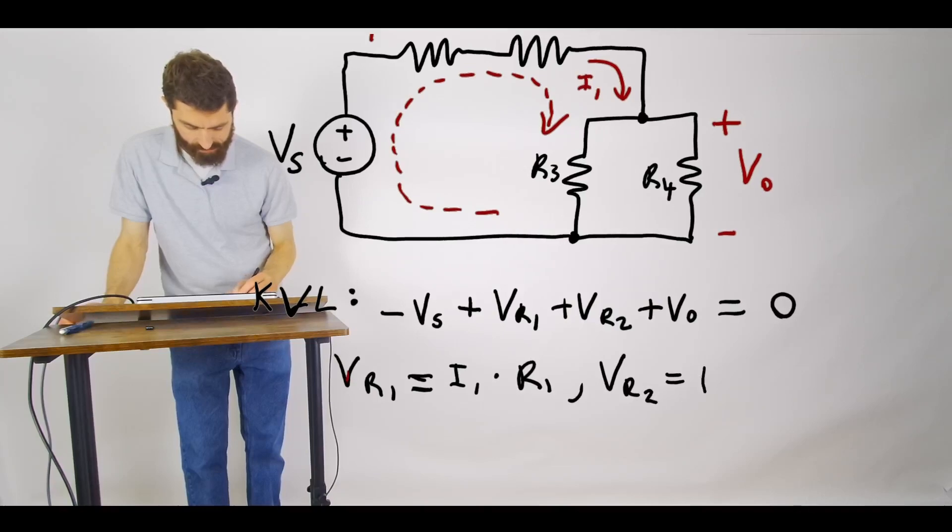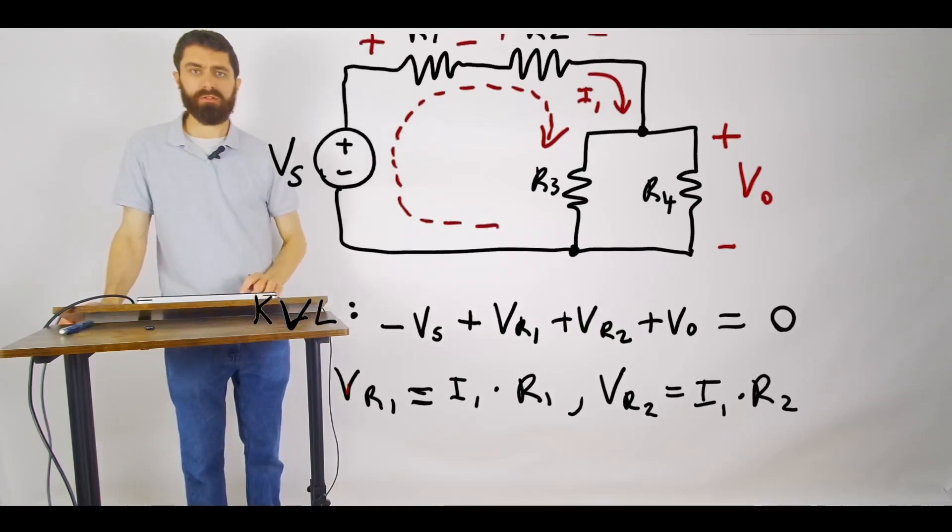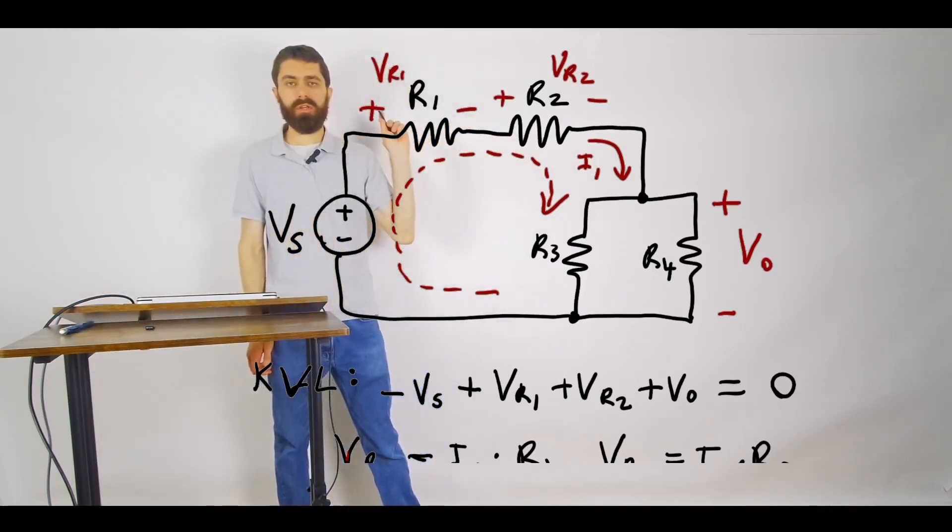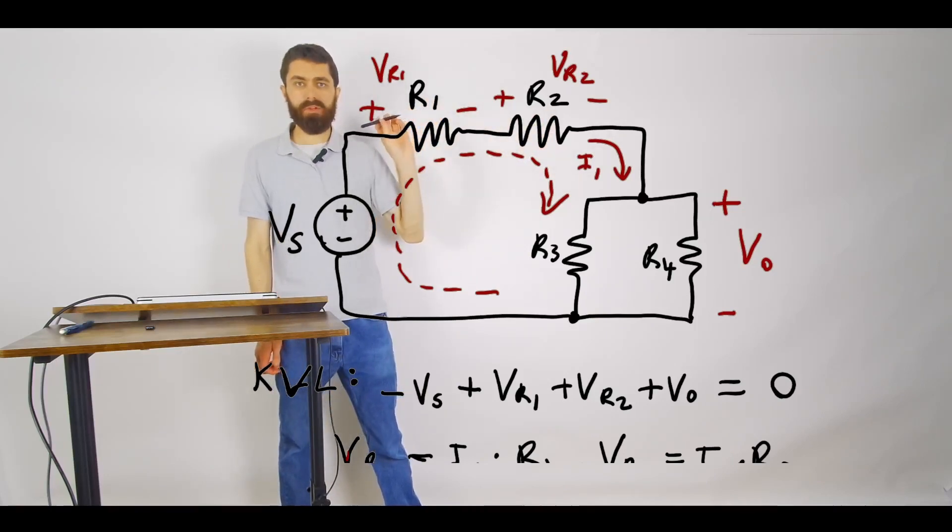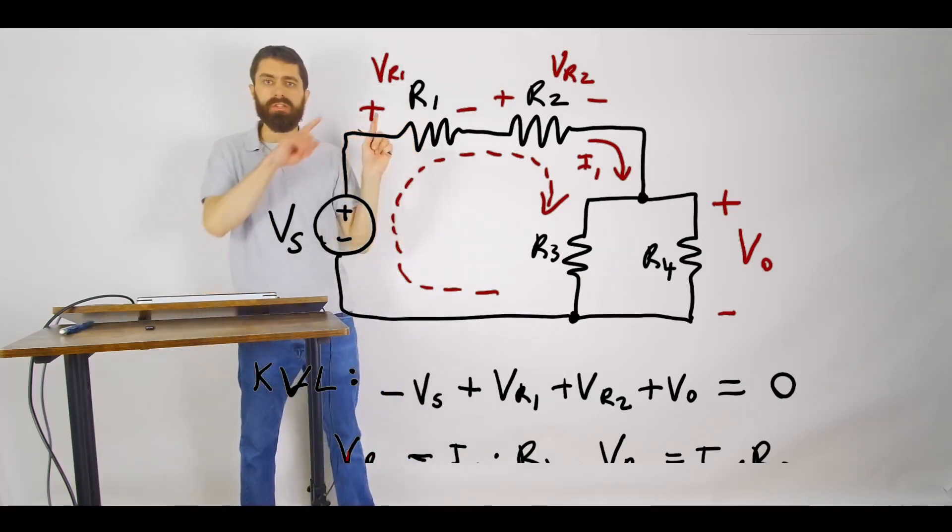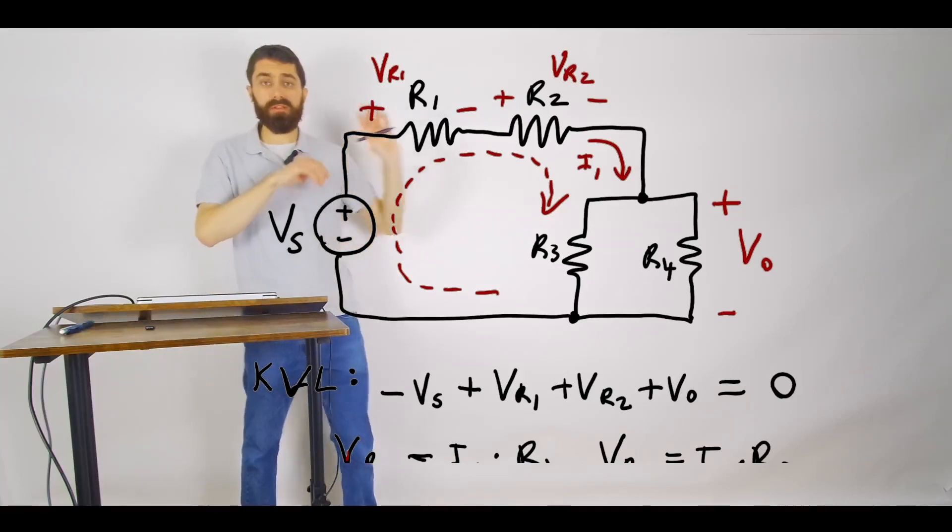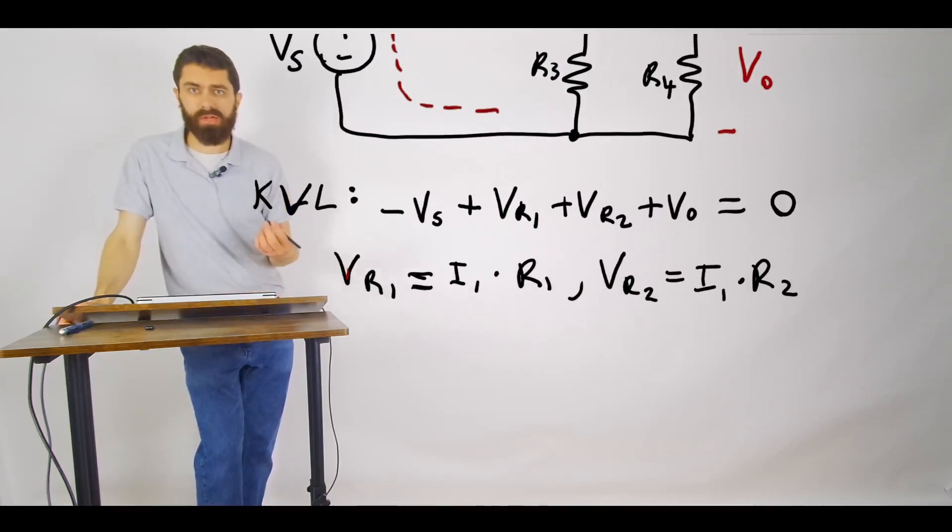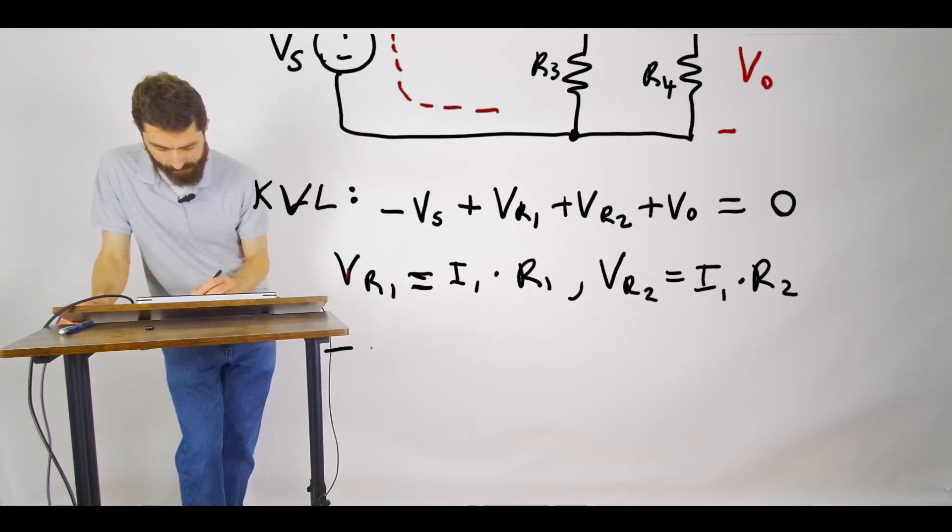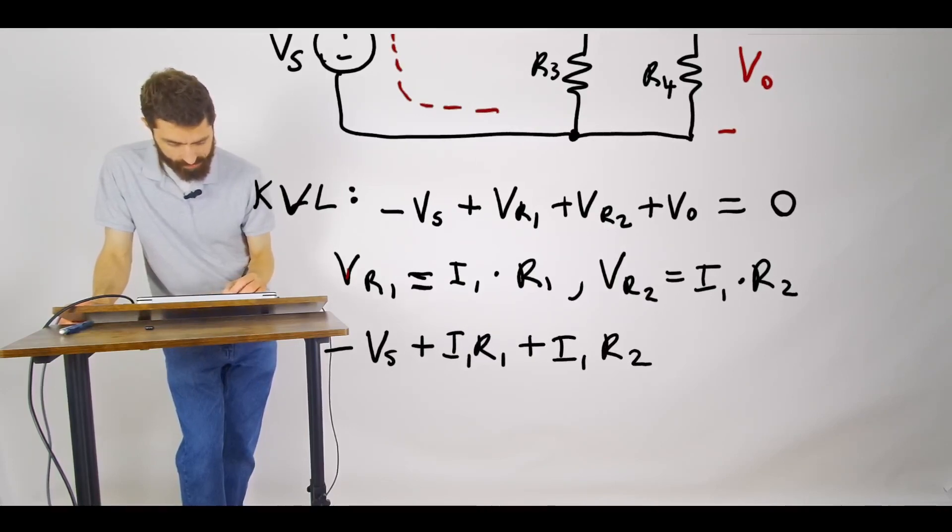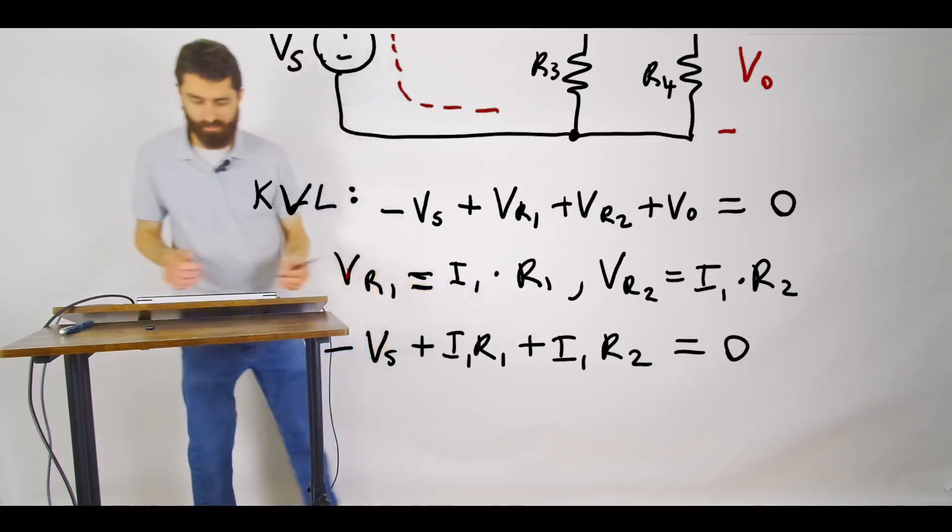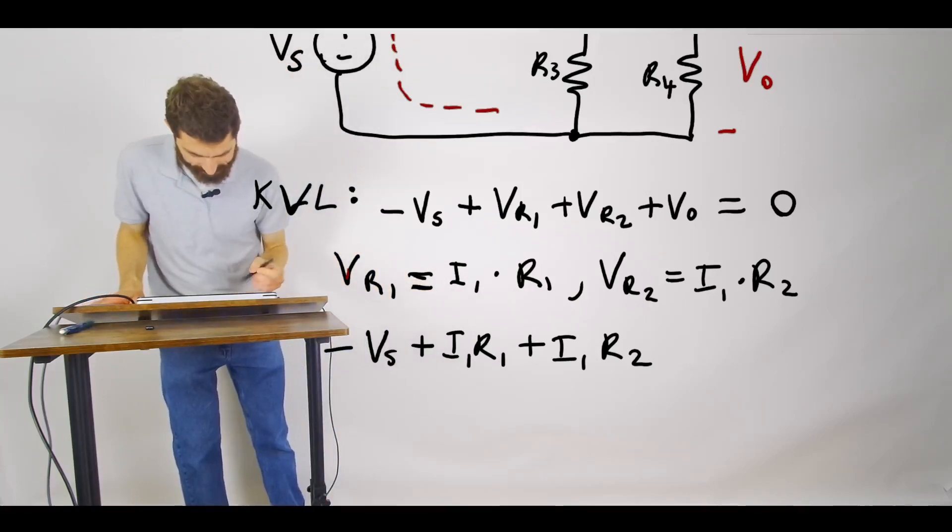And VR2 is equal to I1 times R2. Basically Ohm's law says that if you have a current flowing through a resistor it will generate a voltage plus and minus equal to I1 times R1, and the orientation is from flowing from the positive to the minus, that's how Ohm's law works. So what we can do then is we can plug that into our KVL equation and we get minus Vs plus VR1 which is I1*R1 plus VR2 which is I1*R2, which is equal to zero.